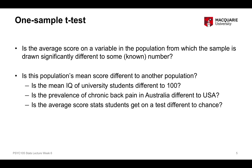Those are three specific kinds of research questions for a one-sample t-test. Remember that we're looking at a single variable — one numeric, quantitative variable — and we're looking at the average score on that variable and asking whether the average score in the population is different to some known, external reference average score.